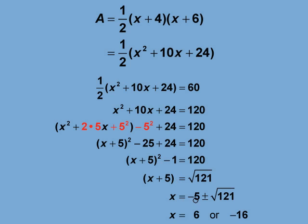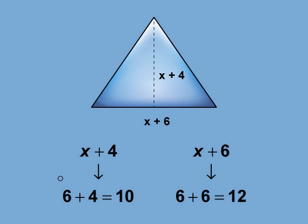x equals 6, or x equals negative 16. Only the positive root makes sense in this context, so we use x equals 6. We use this value to find the base and height of the triangle, and we get a base of 12 and a height of 10.